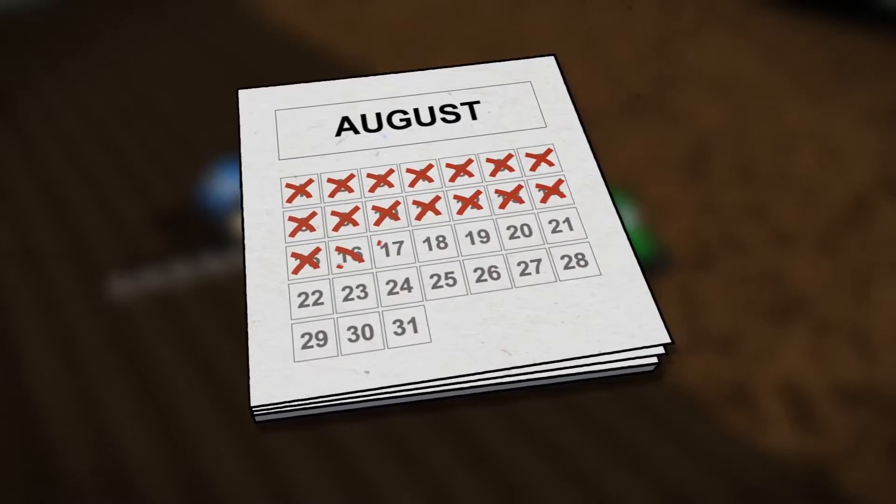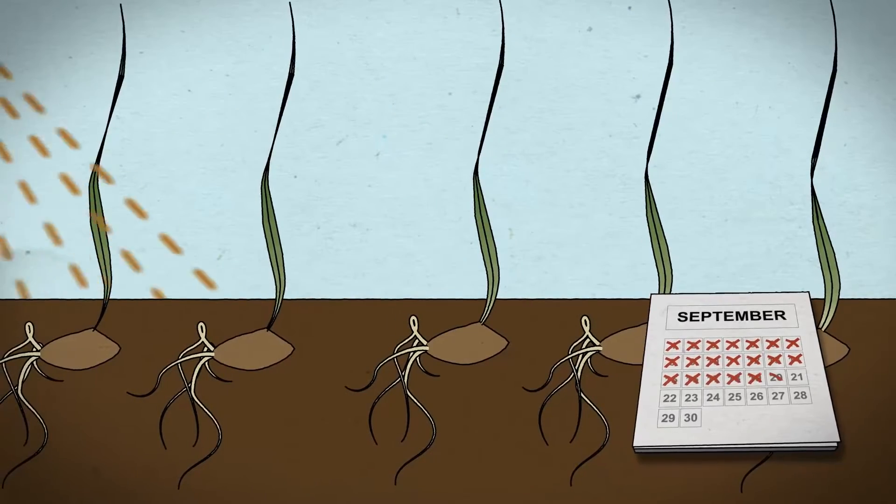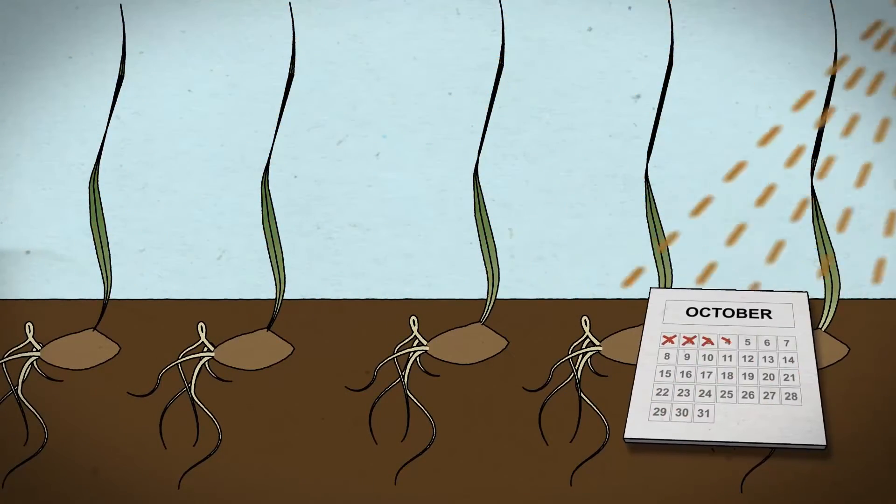Deciding when to drill is the first big decision. Many farmers now opt to drill in October, which gives plenty of time for blackgrass to chit and be controlled before the crop goes in the ground.